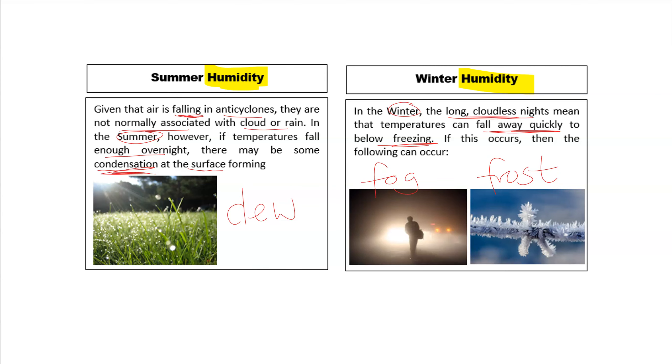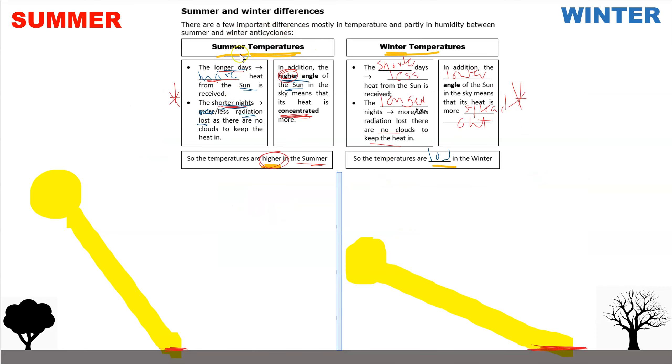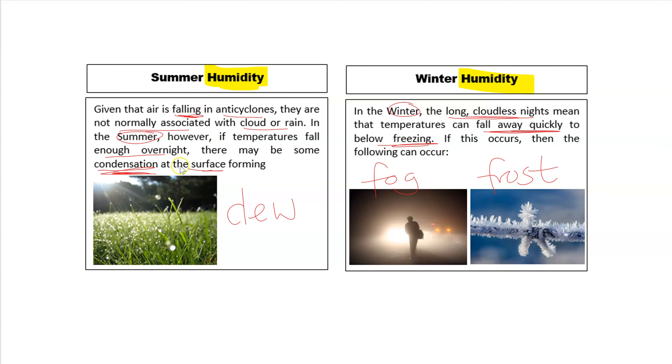So, those are the summer-winter differences. Summer anticyclones are warm because of the longer days and shorter nights and the higher angle of the sun. Winter anticyclones are colder because of the shorter days and longer nights and the lower angle of the sun. And in terms of humidity, in the summer, an anticyclone can bring some dew very early in the morning. In the winter, an anticyclone can bring frost and fog.